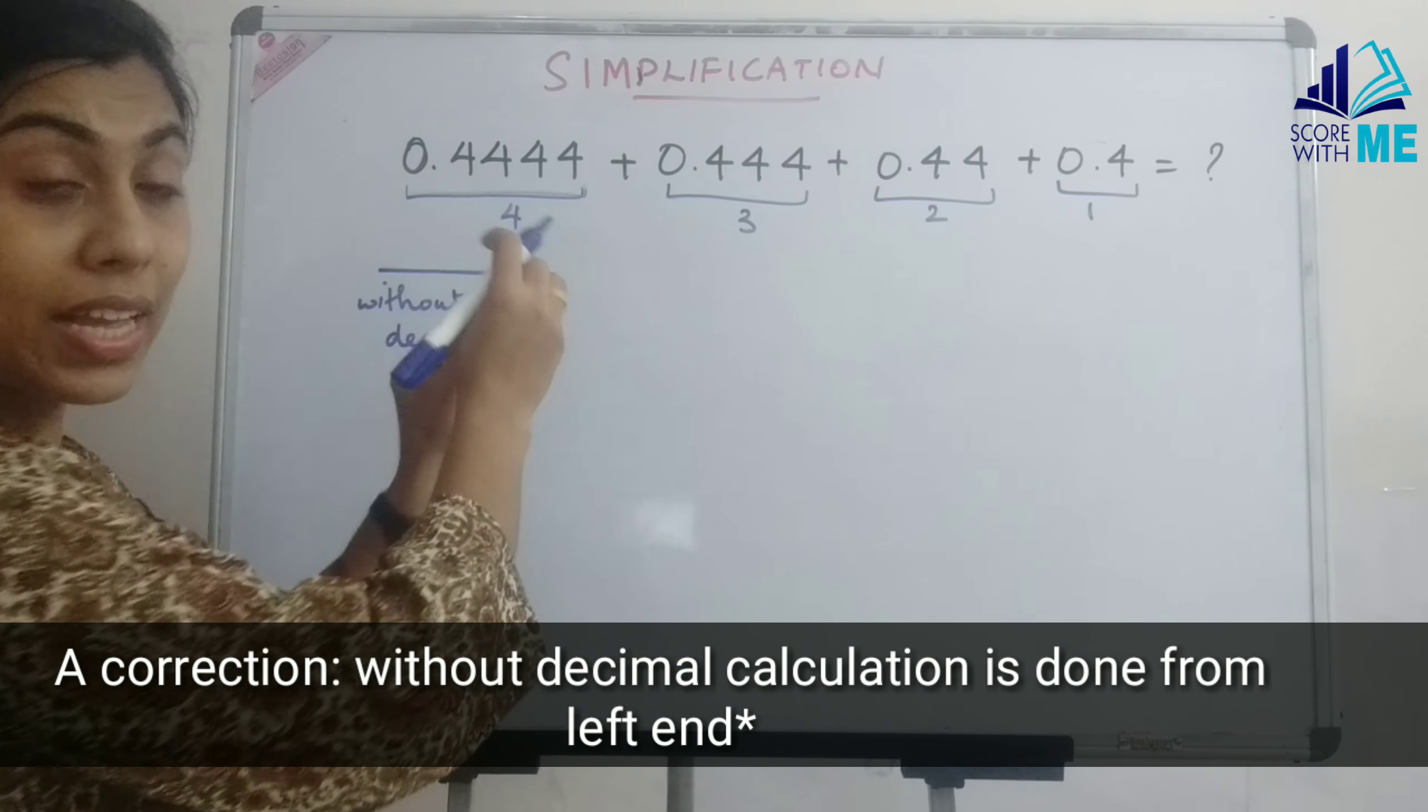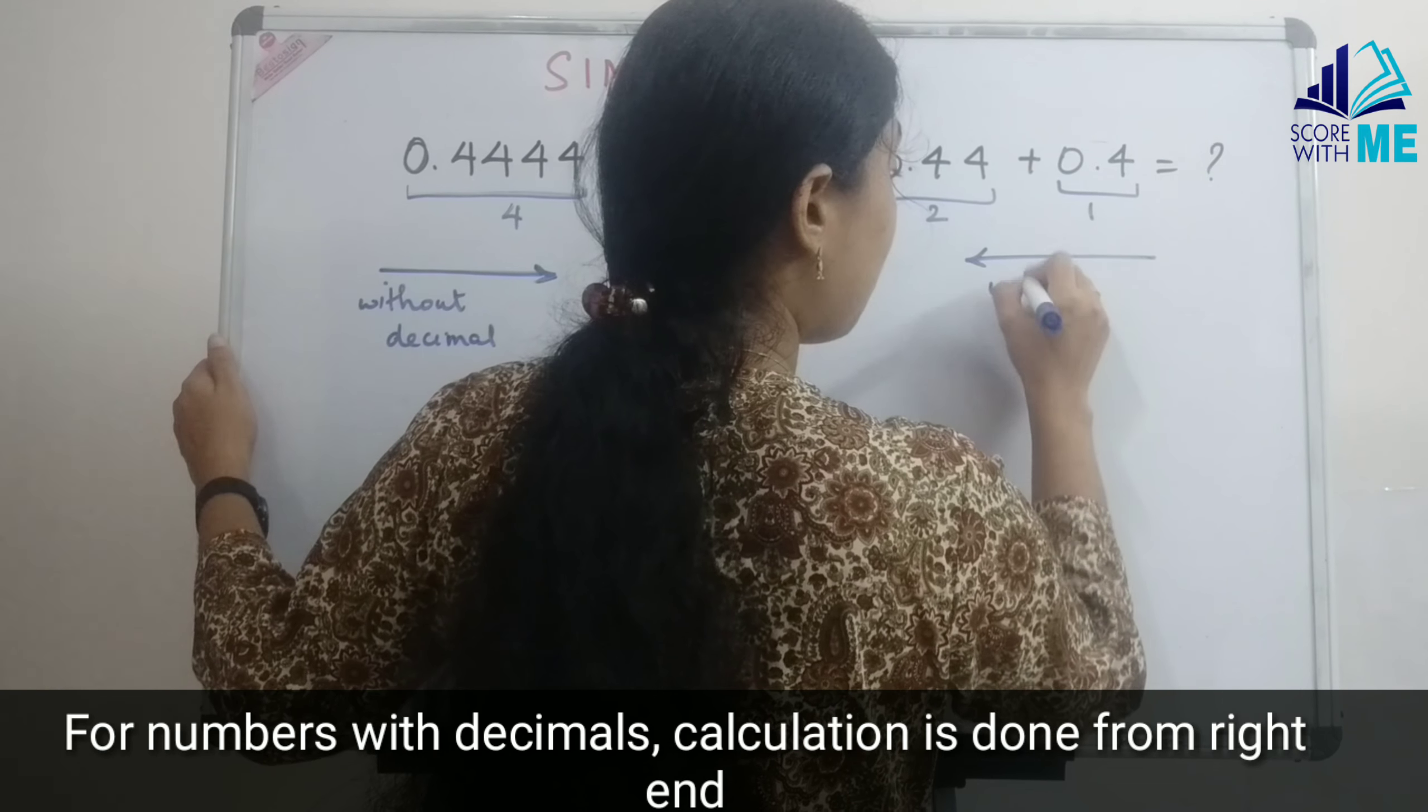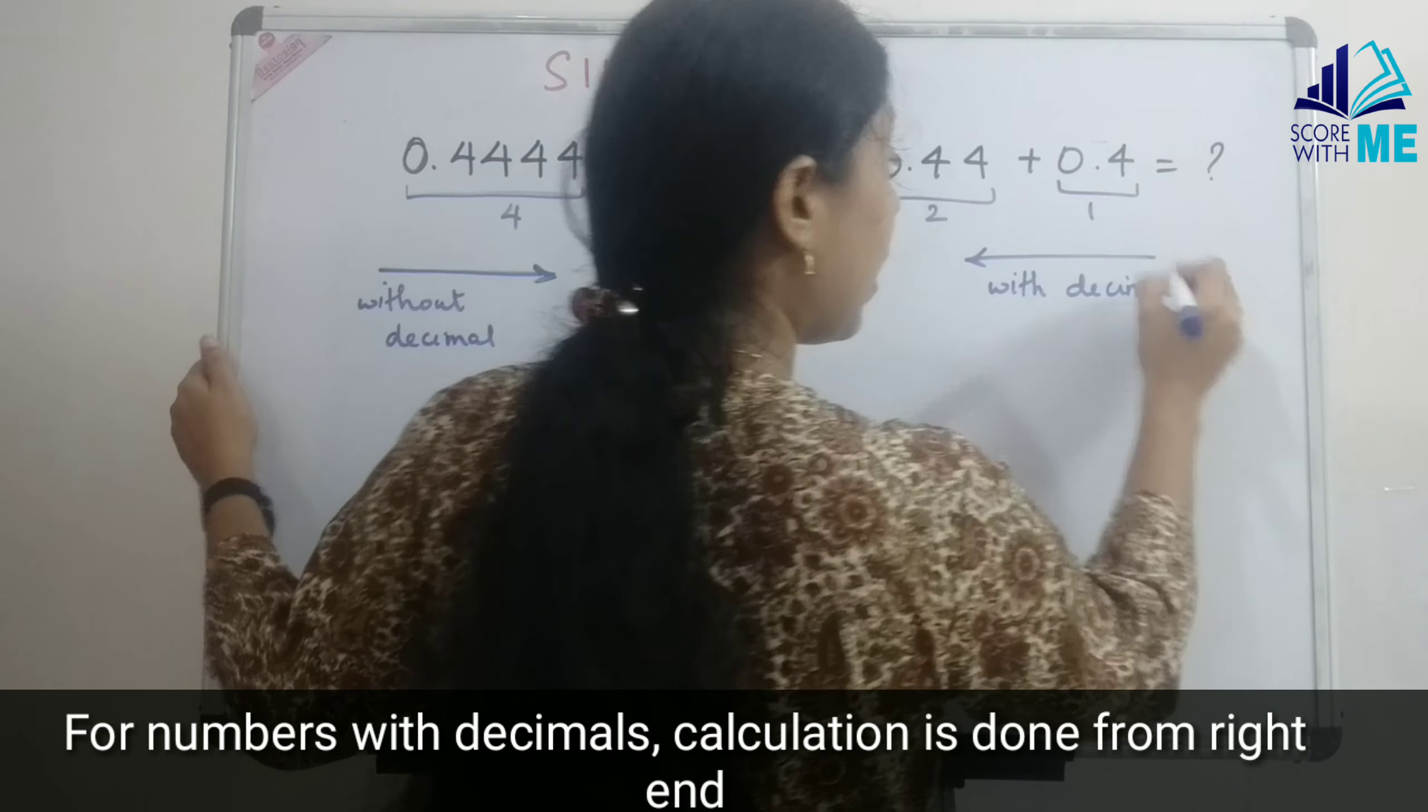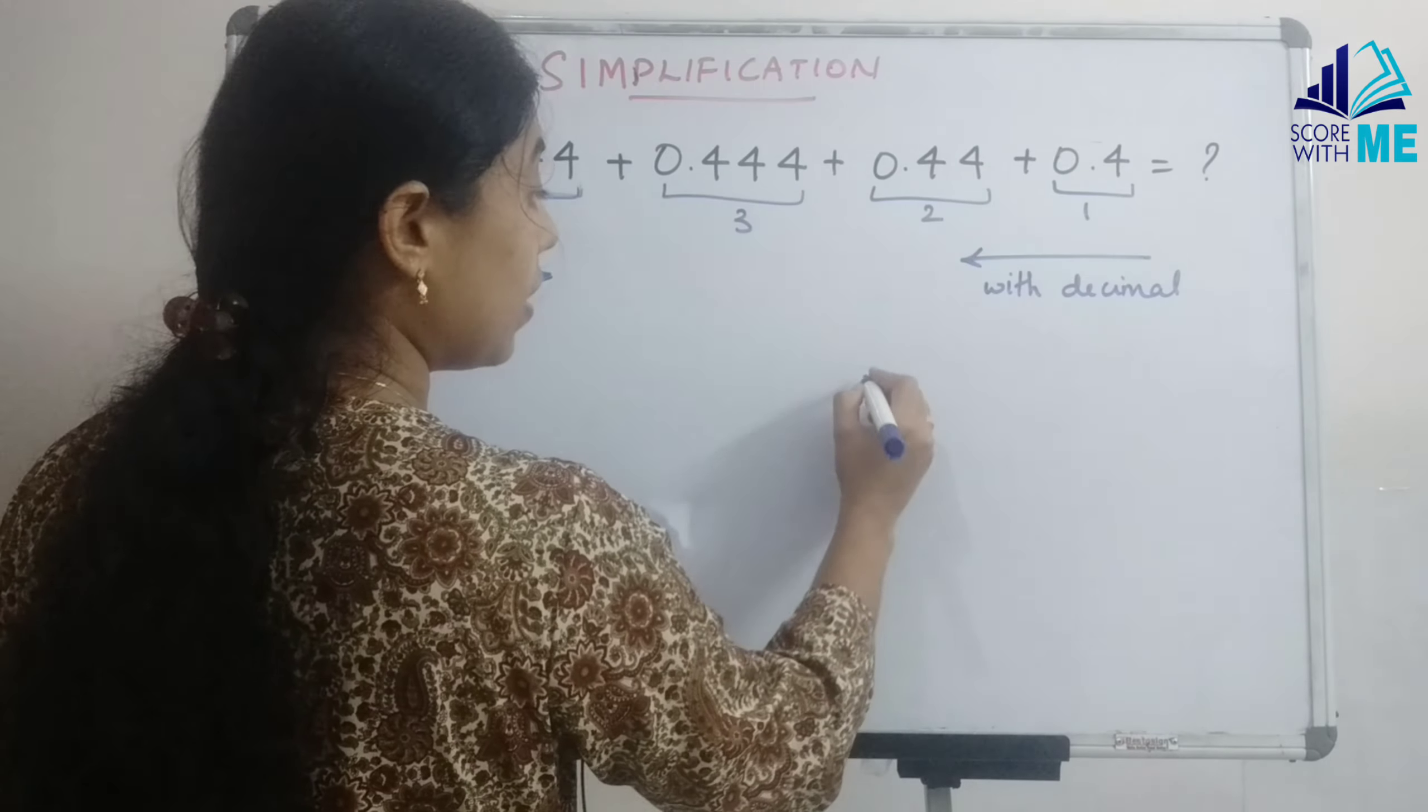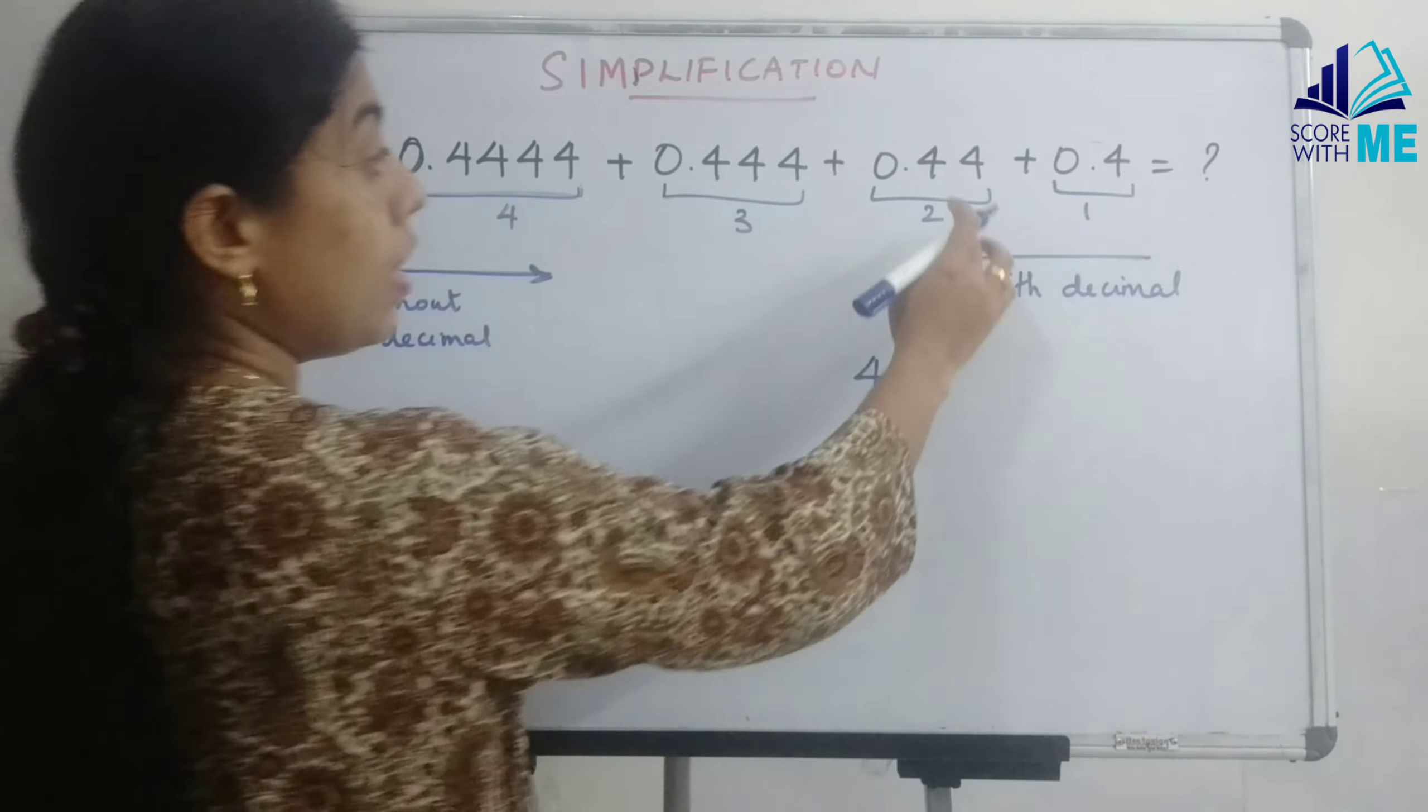Here when a decimal is coming, we are starting our calculation from here. So when the numbers are with decimal, have this thing alone in mind that here our product starts from the right end. And we are taking 4 into 1 is 4. We have got no carry.